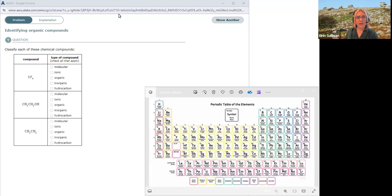So identifying organic compounds is a sneaky name for identifying all kinds of compounds like inorganic compounds and molecular versus ionic compounds. We're doing a bit of review as well.